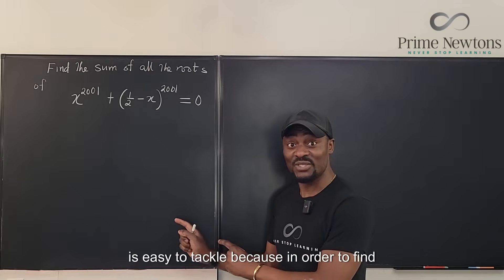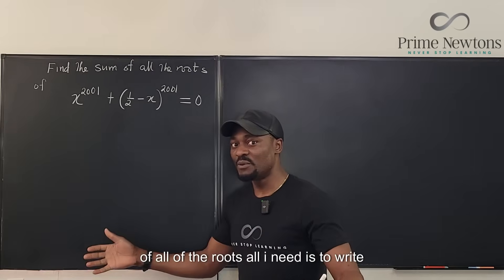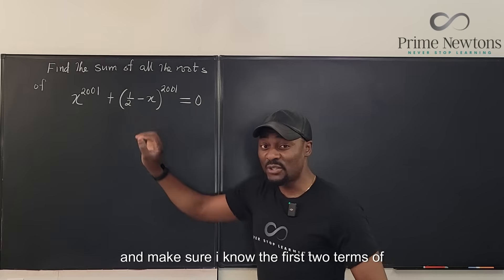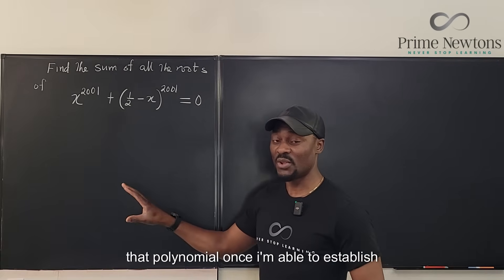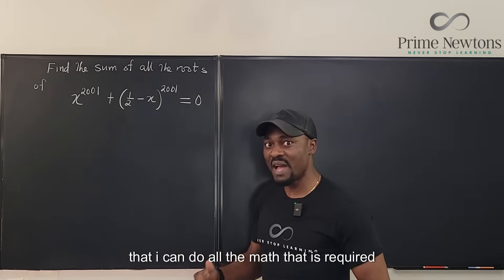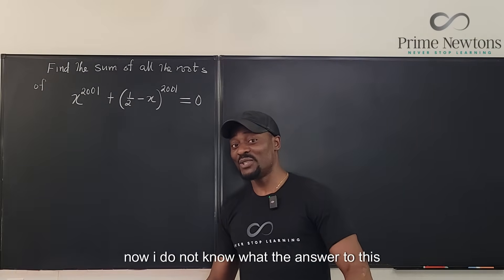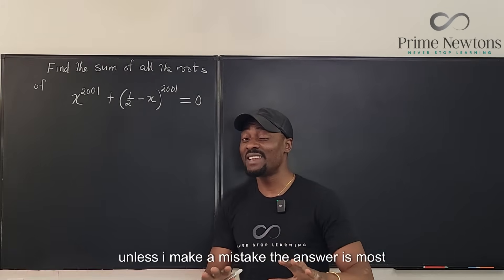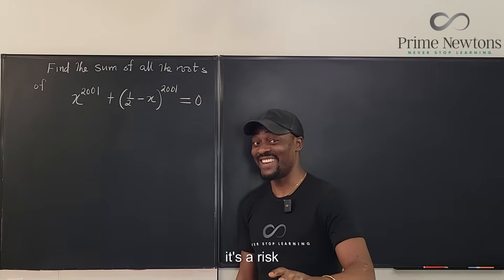This is easy to tackle because in order to find the sum of all of the roots, all I need is to write this as a polynomial and make sure I know the first two terms of that polynomial. Once I'm able to establish that, I can do all the math required to get the answer. I do not know what the answer to this question is, but I know what to do — so unless I make a mistake the answer is most likely going to be right. It's a risk.